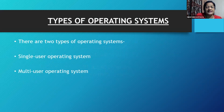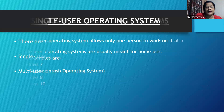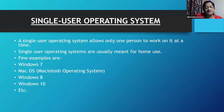There are two types of operating systems: single user operating system and multi-user operating system. A single user operating system allows only one person to work on it at a time. Single user operating systems are usually meant for home use. A few examples are Windows 7, Mac OS (Macintosh operating system), Windows 8, Windows 10, etc.